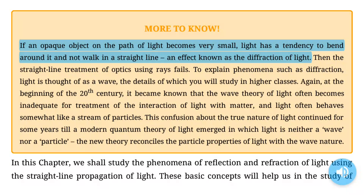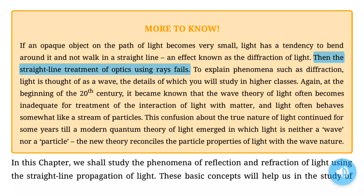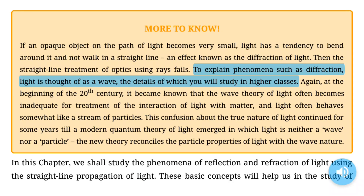More to know: If an opaque object on the path of light becomes very small, light has a tendency to bend around it and not walk in a straight line — an effect known as the diffraction of light. Then the straight line treatment of optics using rays fails. To explain phenomena such as diffraction, light is thought of as a wave, the details of which you will study in higher classes.